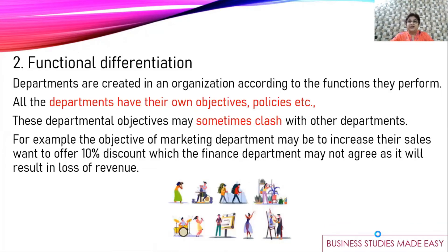Then comes functional differentiation. Departments are divided according to functions, and each function has its own objectives and policies. Sometimes their objectives clash with other departments. For example, the marketing department wants to increase sales and therefore wants to give a 10% discount, but the finance manager does not agree — he says giving a 10% discount will reduce profit, and the finance department's objective is to increase profit. So there is a clash between marketing and finance. Because different departments look after different functions, they are sometimes at loggerheads, and therefore coordination is important. The CEO and top management will intervene and coordinate between these two departments.